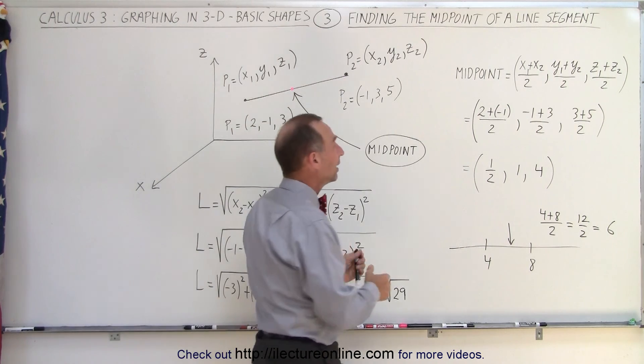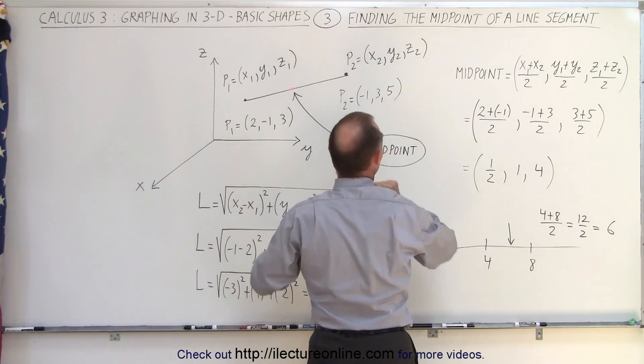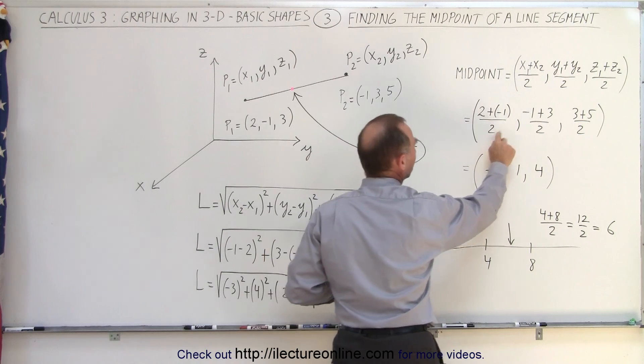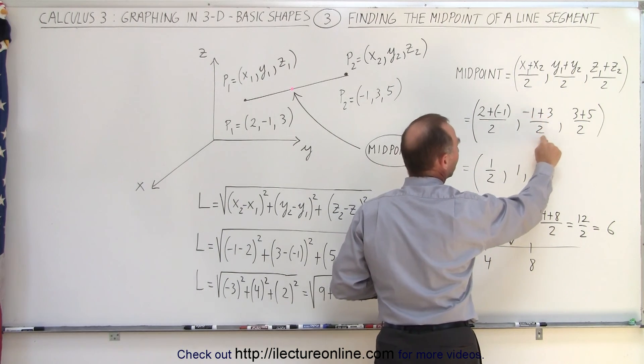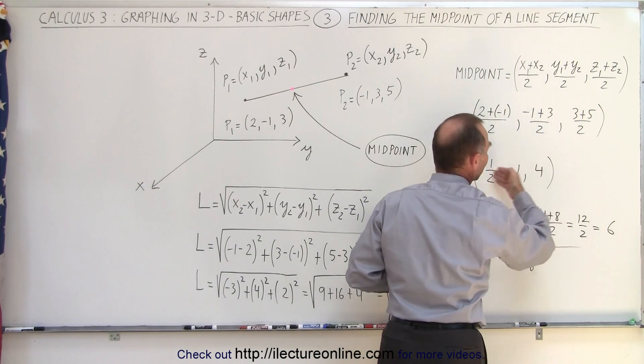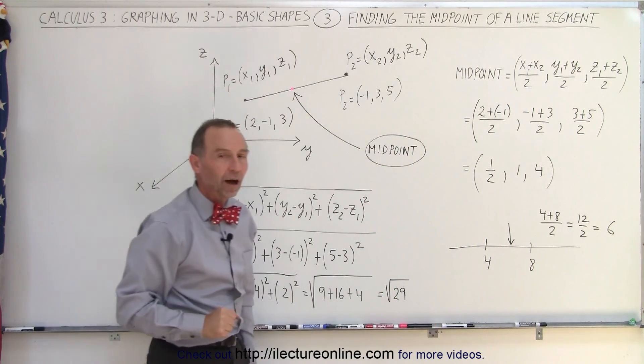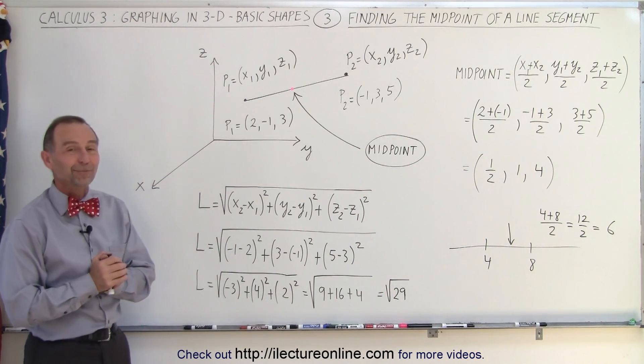So using that technique, we apply that to the two points that we have. We add the two x components together, divided by 2. The two y components, divided by 2. The two z components, divided by 2. And there's the coordinates of the midpoint. And that's how it's done.